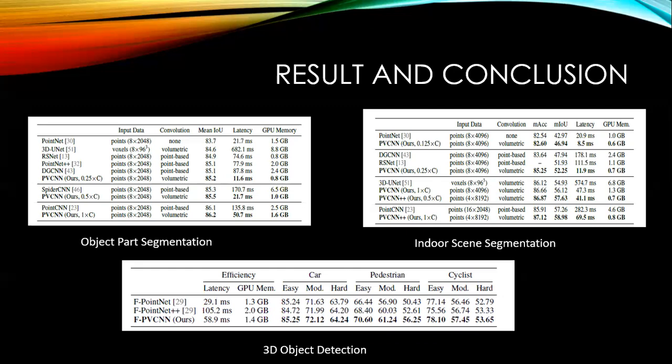For indoor scene segmentation on mIoU, PV-CNN and PV-CNN++ outperform the point-based model with 8 times measured speedup and 3 times memory reduction. They outperform the voxel-based baseline with 14 times measured speedup and 10 times memory reduction. They also design compact models of PV-CNN and PV-CNN++ by reducing the number of channels which show better performance.